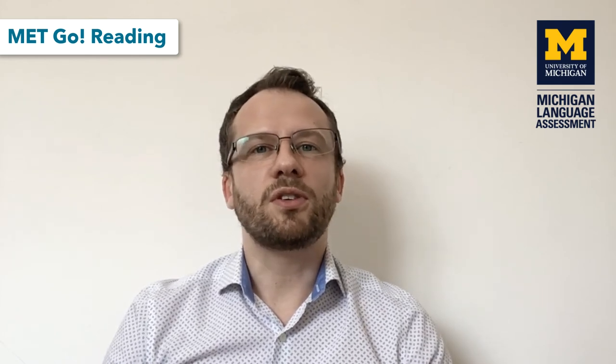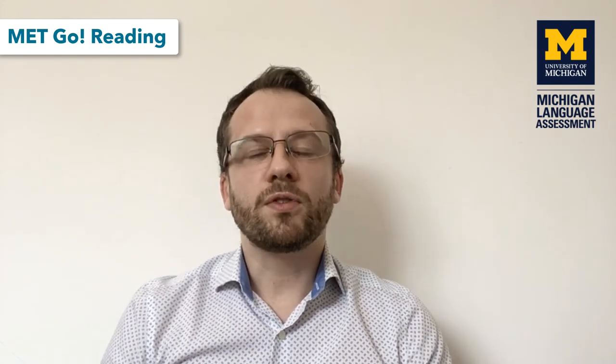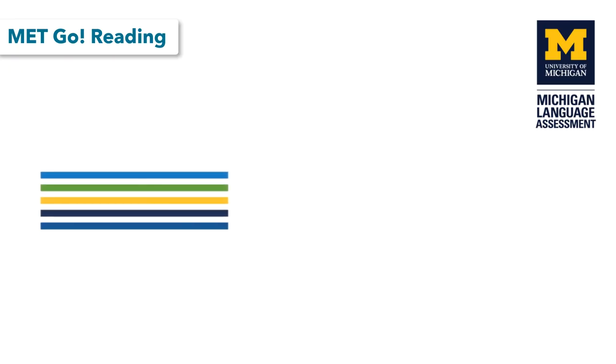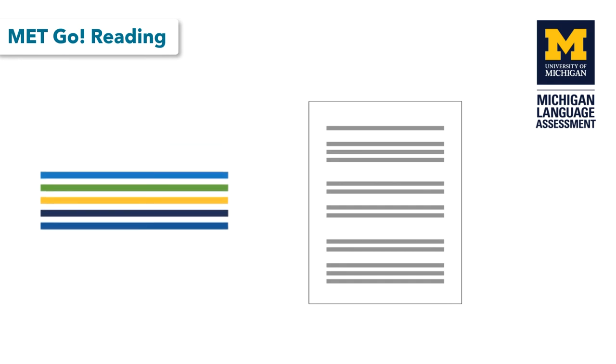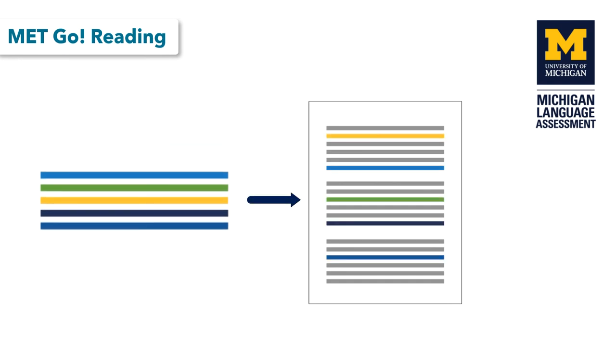There are lots of ways of doing this — individually, as a class, or in groups, then feeding back to check answers. Once they've unscrambled the sentences, there are two things you can do. If it's a strong class, give them the reading text with those five sentences missing, and they need to place the correct sentences back into the reading text.